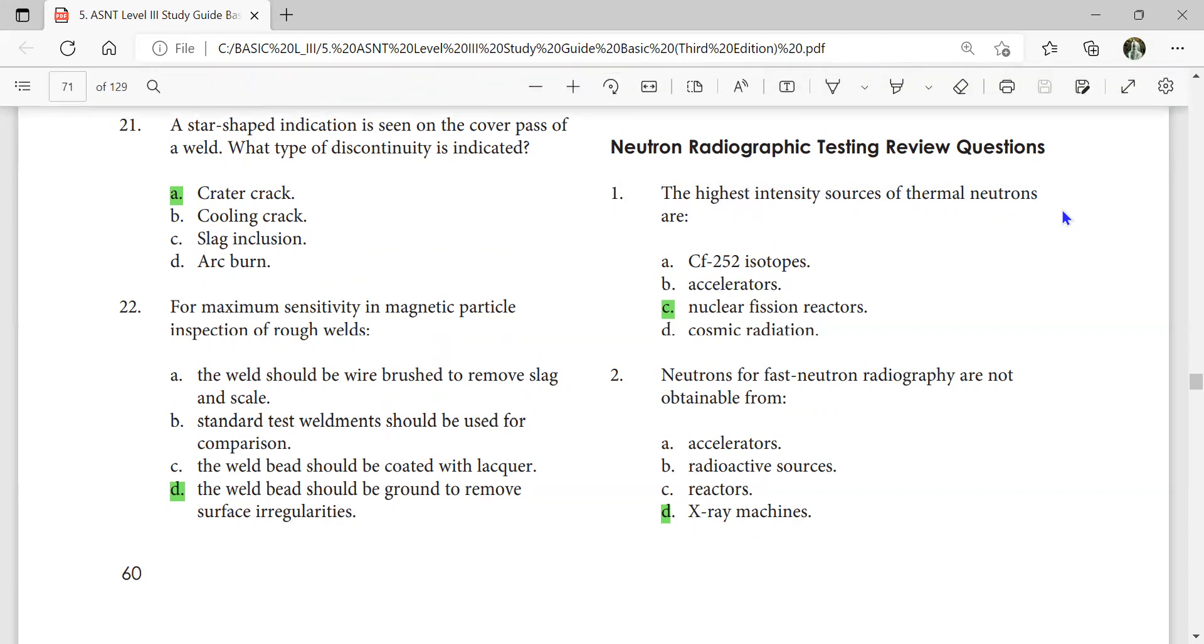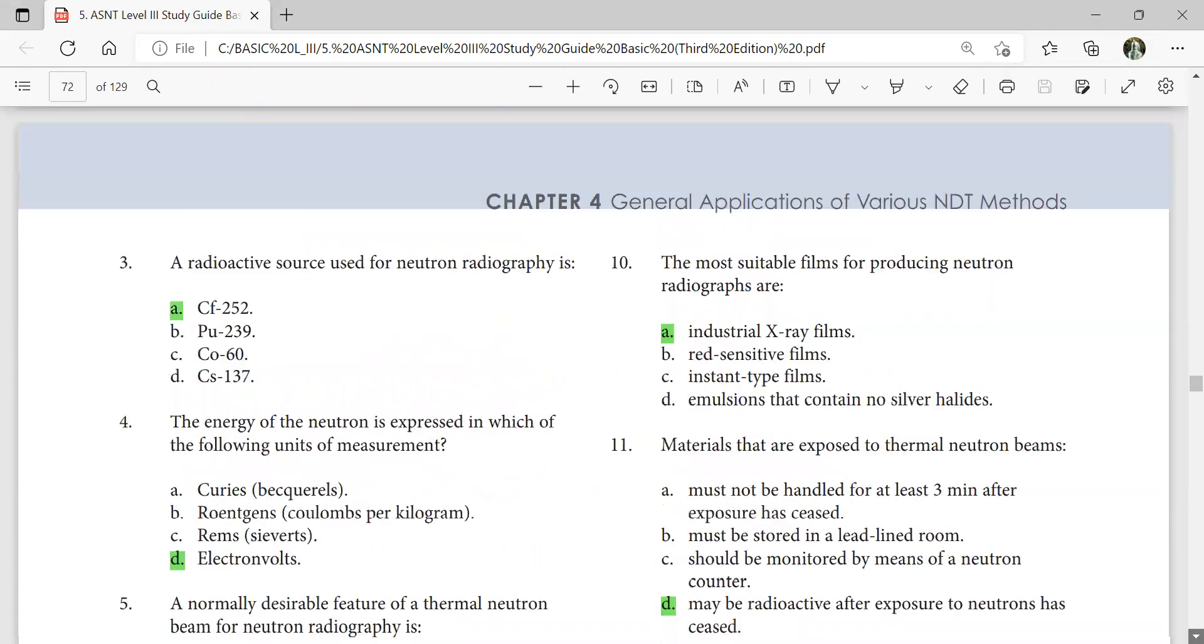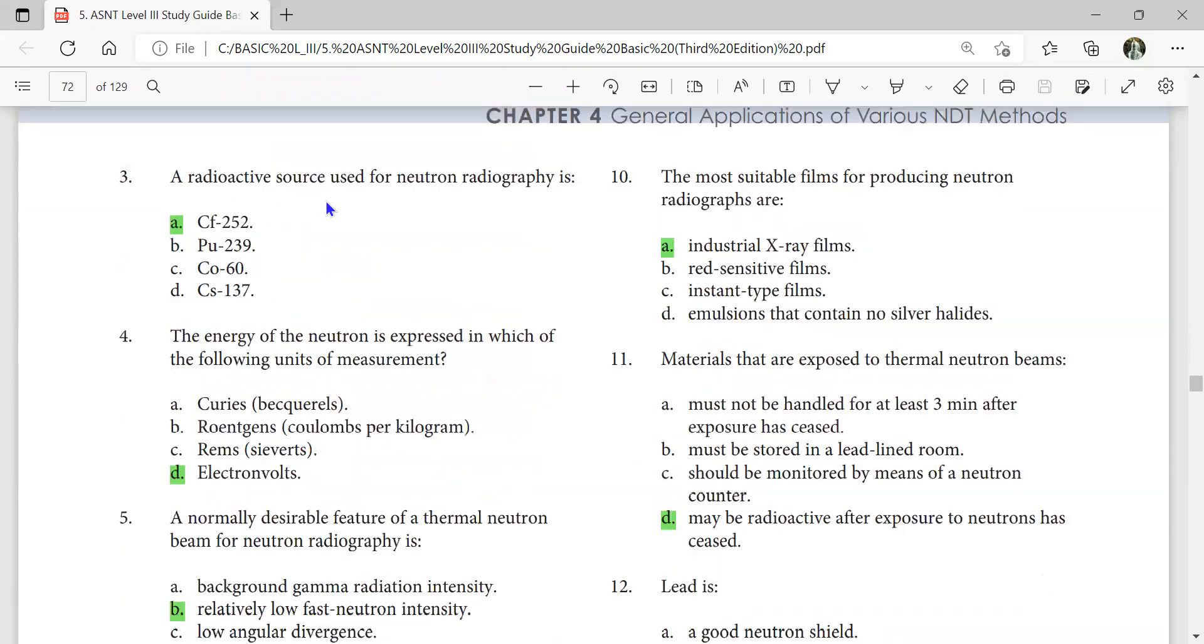The highest intensity neutron sources for fast neutron radiography are not obtainable from x-ray machines. A radioactive source used for neutron radiography is Californium-252. The most suitable film for producing neutron radiographies are industrial x-ray films. The energy of the neutron is expressed in electron volts. Materials that are exposed to thermal neutron beams may be radioactive after exposure to neutron has ceased.